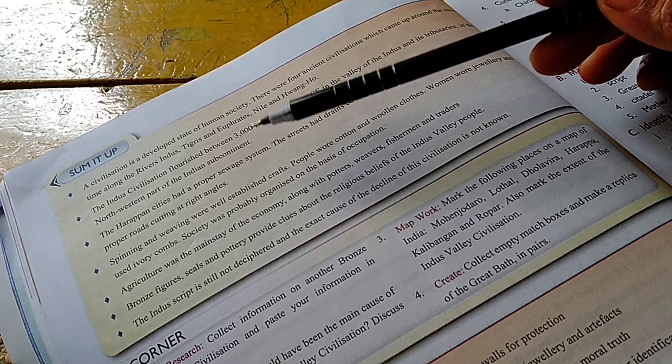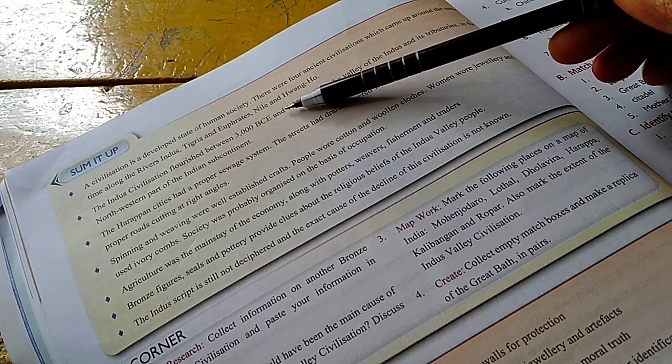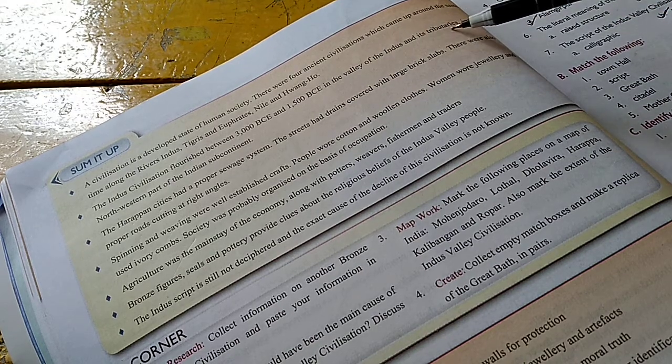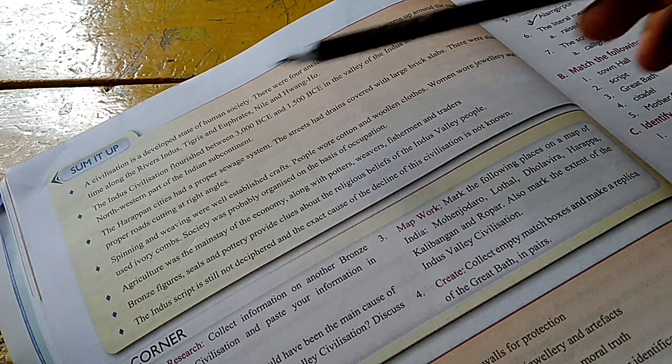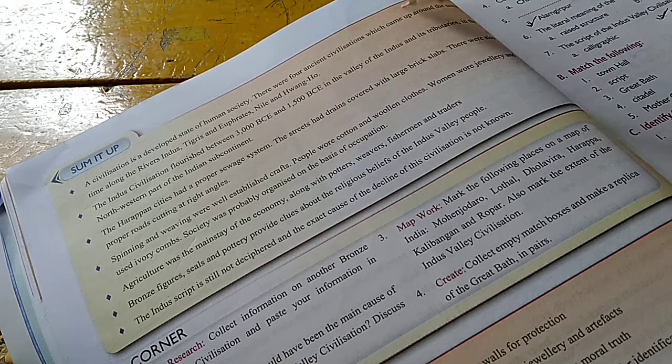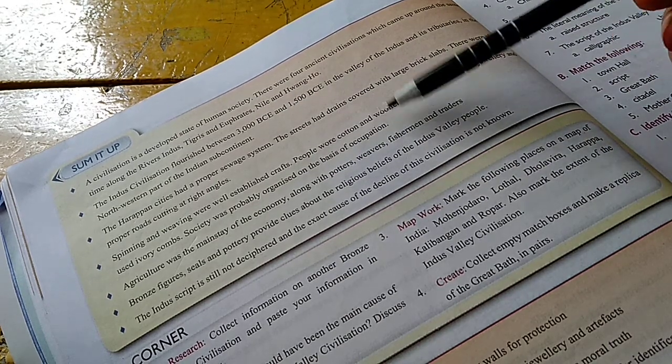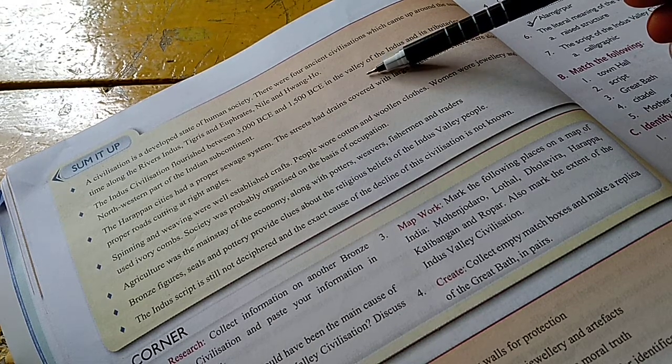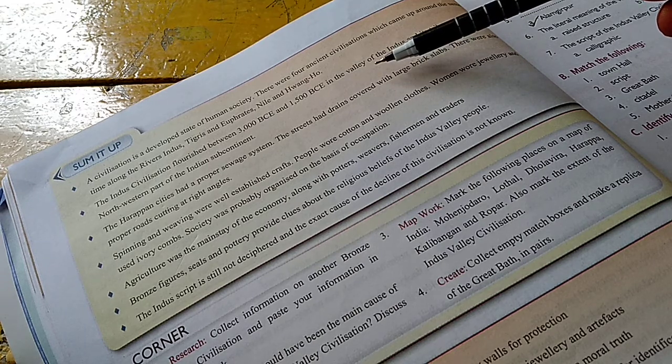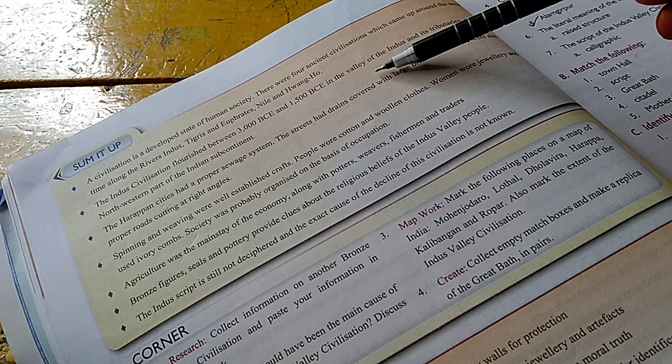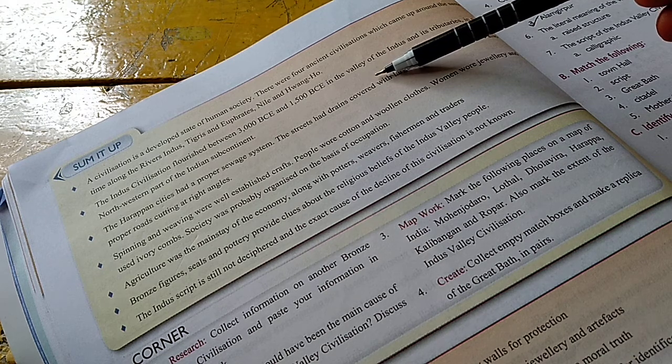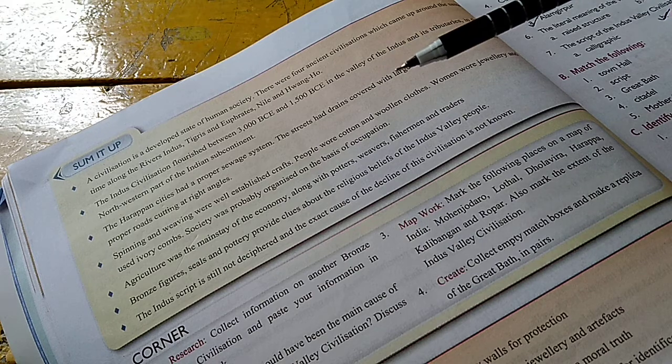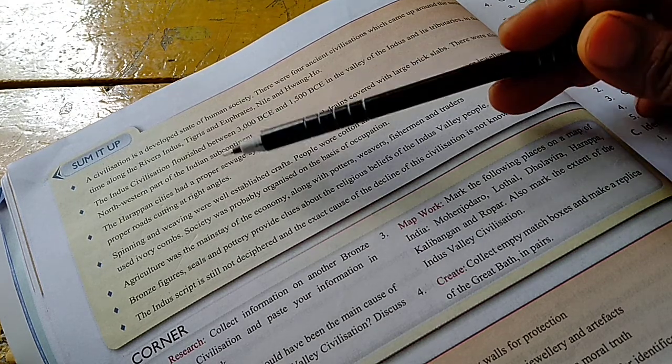The Indus civilization flourished between 3000 BCE and 1500 BCE in the valley of the Indus and the tributaries in the north-western part of the Indian subcontinent. I have asked you to draw the timeline also. You should study that timeline and draw it in your copy. That will help you to understand it better.